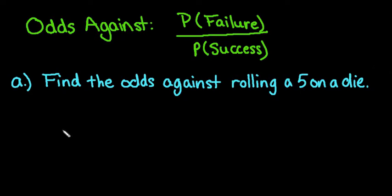The first situation is finding the odds against rolling a 5 on a die. When you're thinking about this, the first thing you want to do is think about the options that could happen. In this case, we could roll a 1, 2, 3, 4, 5, or 6.